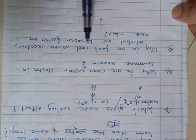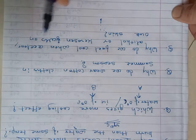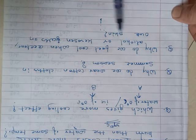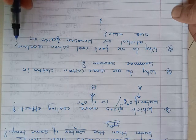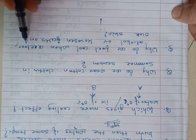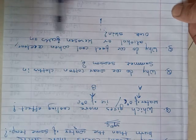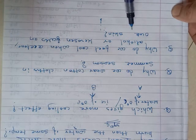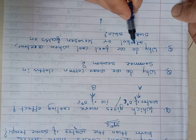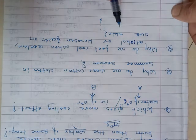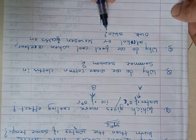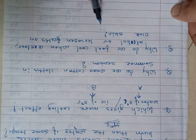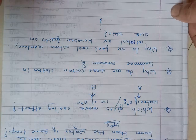Next question: why do we feel cool when acetone, alcohol, or kerosene falls on our skin? When these substances fall on our skin, they absorb the latent heat of vaporization from our skin. These substances — such as nail paint remover containing acetone, or sanitizers containing alcohol — are highly volatile and easily convert from liquid to vapour. As they evaporate, they absorb heat from our body and lead to a cooling effect. So children, this is about today's lecture. Thank you.